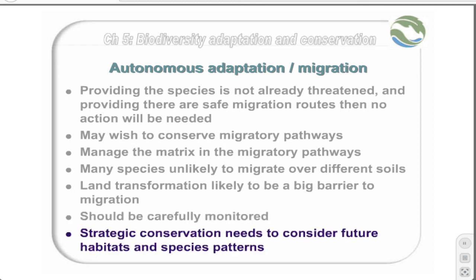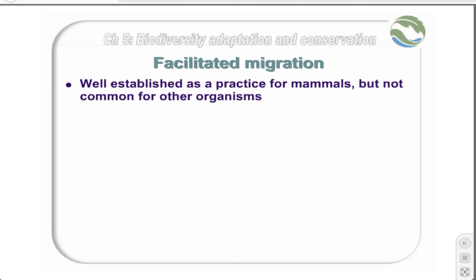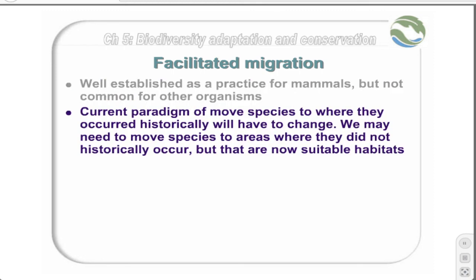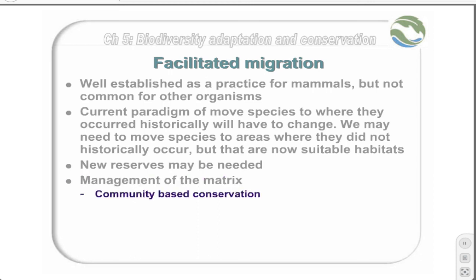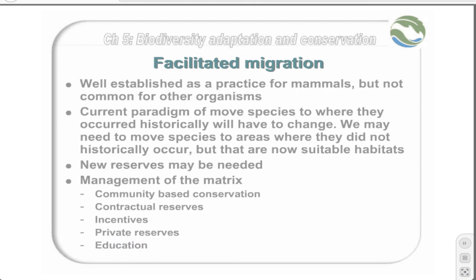For this reason, strategic conservation planning needs to consider future habitat and species patterns. For many of the species that are able to find new habitats in the future, it is very likely that some level of human facilitation will be needed to help them migrate. In a simple case, this might be simply managing the areas outside of conservation areas to ensure they are friendly for species to migrate through them. In this regard, community-based conservation may be an important strategy. It might also be important to form contractual reserves, where the landowner enters into a contract with conservation authorities to keep his land for conservation purposes. Less severe methods could be through incentives to landowners, use of private reserves, and general education. In many cases, landowners are not aware of the need for migration, and simply understanding the benefits they can give to conservation might be sufficient for them to engage.